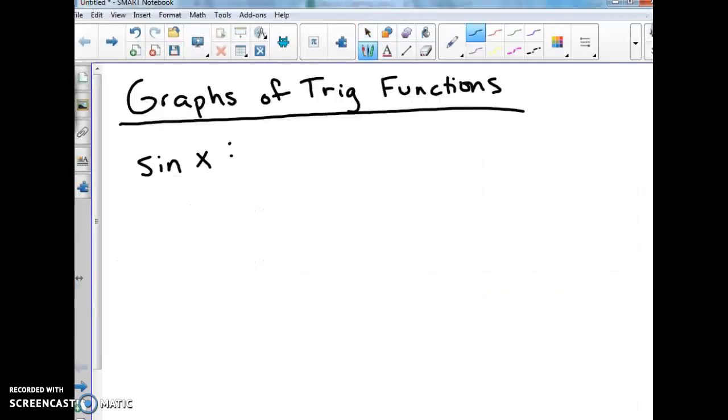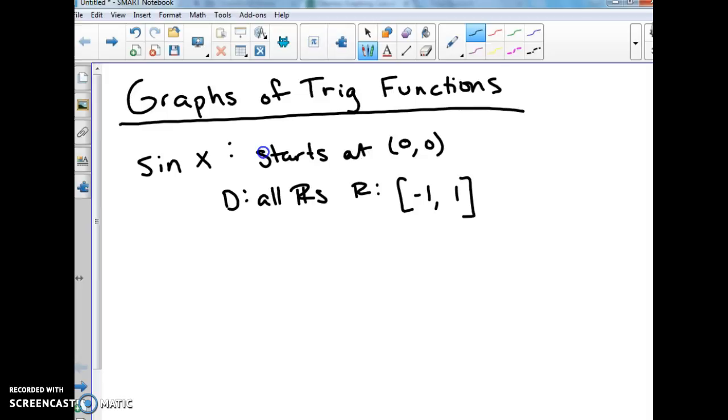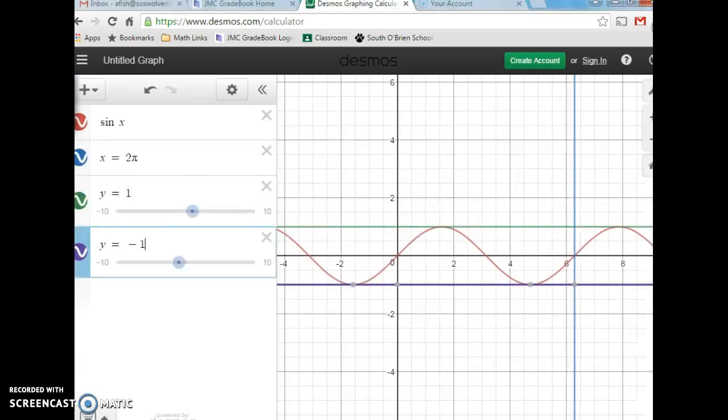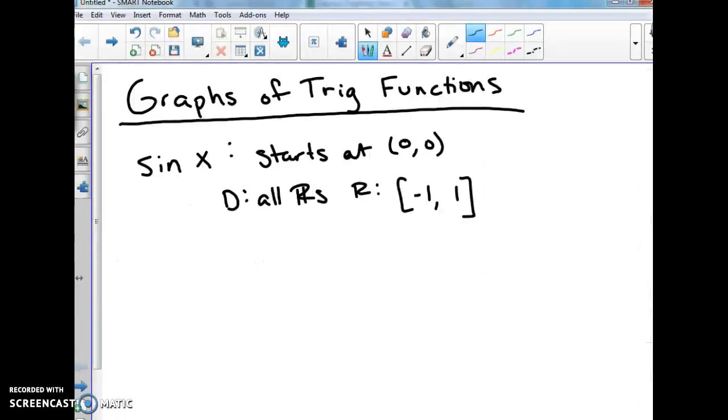So let's write down these characteristics. So the sine of x starts at (0,0). The domain is all real numbers. The range is from negative 1 to positive 1. And our period length, which is when we start at this wave, when does it go back to be the same? So the period length here is going to be 2π. Full wave from 0 to 2π.